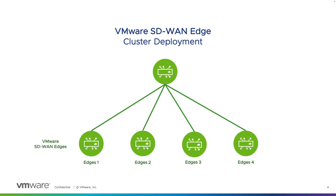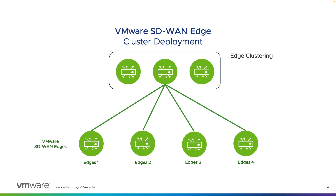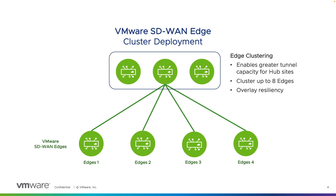For large networks containing thousands of remote sites, you can split the load by promoting multiple edges as hubs, or you can utilize clustering, allowing multiple hubs to be leveraged at the same site location while providing the simplicity of managing these hubs as one. This enables greater tunnel capacity for a hub site, allowing up to eight virtual or physical edges to be used. The selection of which edge platform to use will depend on the required number of tunnels. There is also added benefit of overlay resiliency, as the load will be redistributed to other edges in the cluster if one of the edges happens to fail, enabling the overlay tunnels for its spokes to stay active.